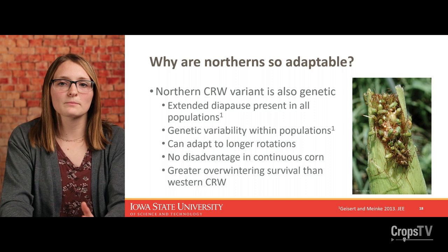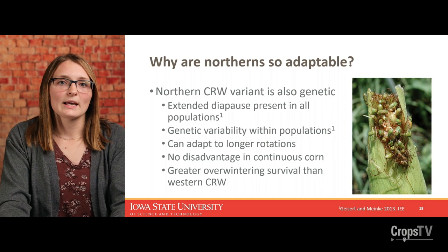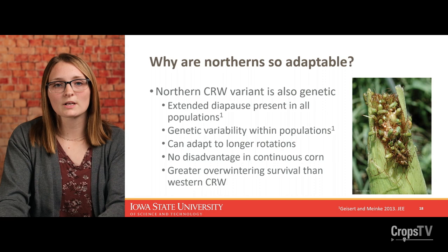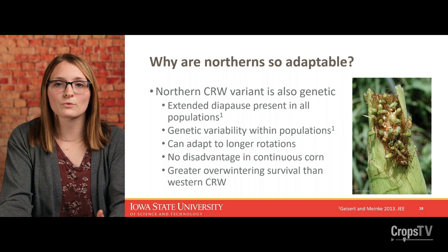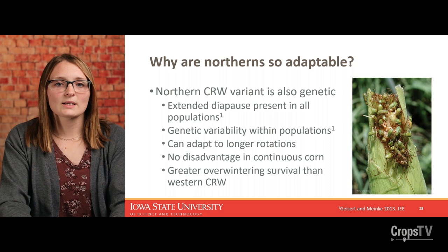The northern corn rootworm variant is also a genetic trait. It's been present in all of the populations that people have looked for it in, and there seems to be a lot of variability within those populations — some eggs from a particular field will hatch after one year, some after two, three years, and so on. Because those eggs can survive for three or four years, they can also adapt to longer rotations, which makes it a bit more challenging for this particular species.